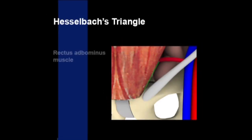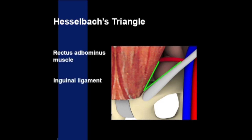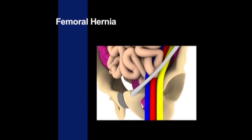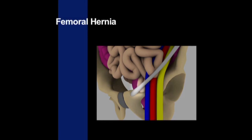This structure is bordered medially by the rectus abdominis muscle, inferiorly by the inguinal ligament, and superior laterally by the inferior epigastric artery. Femoral hernias pass inferior to the inguinal ligament through a structure called the femoral canal, located medial to the femoral nerve, artery and vein.